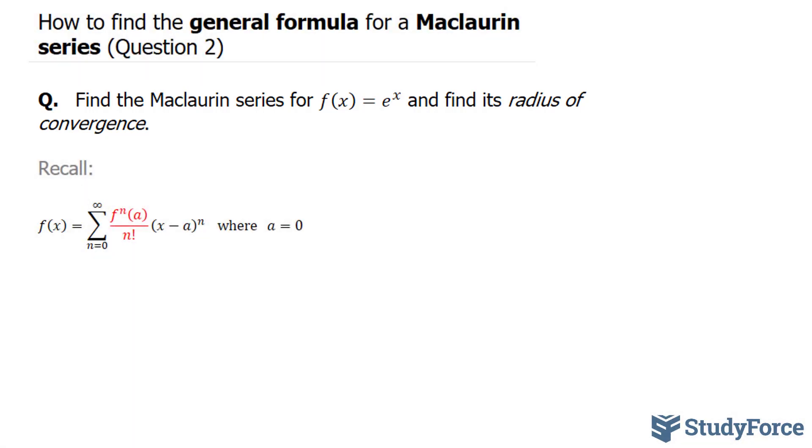Recall that a Maclaurin series, the general formula, looks like this where a is set equal to 0. And that's the fundamental difference between a Maclaurin series and a Taylor series.